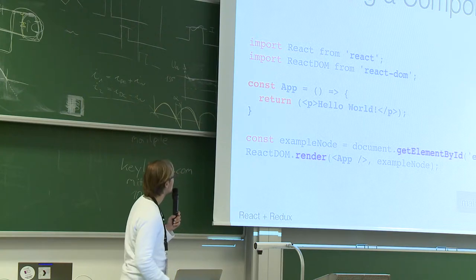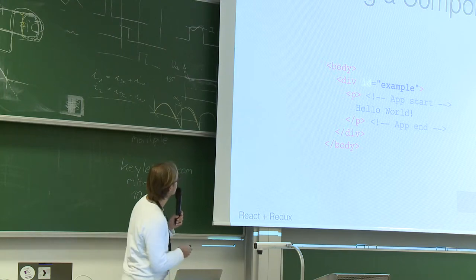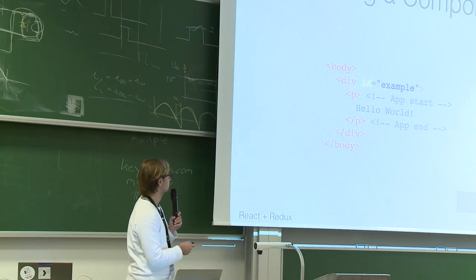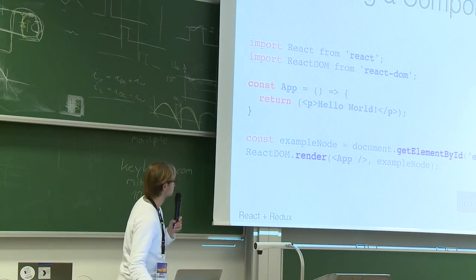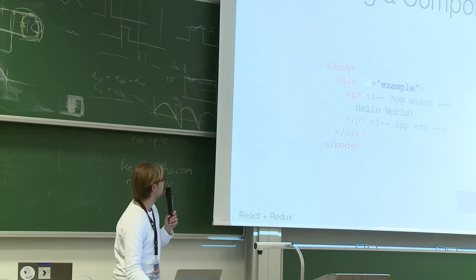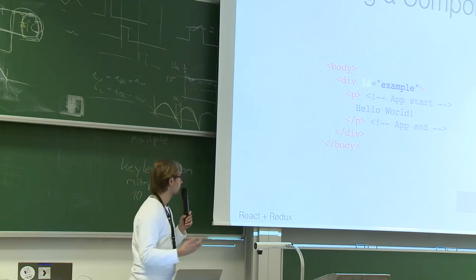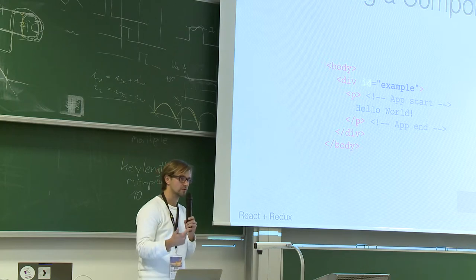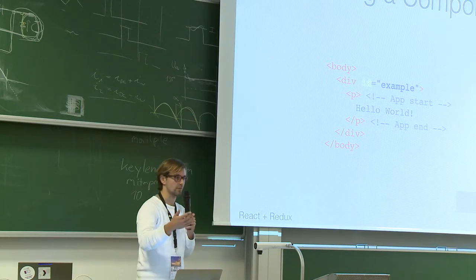You can reuse this component as a tag. The output: because we have our app component and render it into our example node, you have the body, the div with the example ID, and then our app starts — because the app is just a paragraph tag with 'Hello World' inside it. It gets rendered directly in there. Of course, the virtual DOM is in between — React renders to the virtual DOM first, identifies if it differs from the real DOM, then applies those changes.